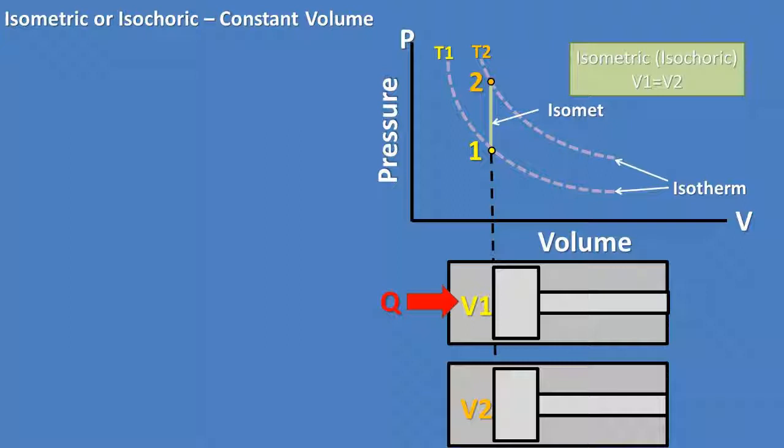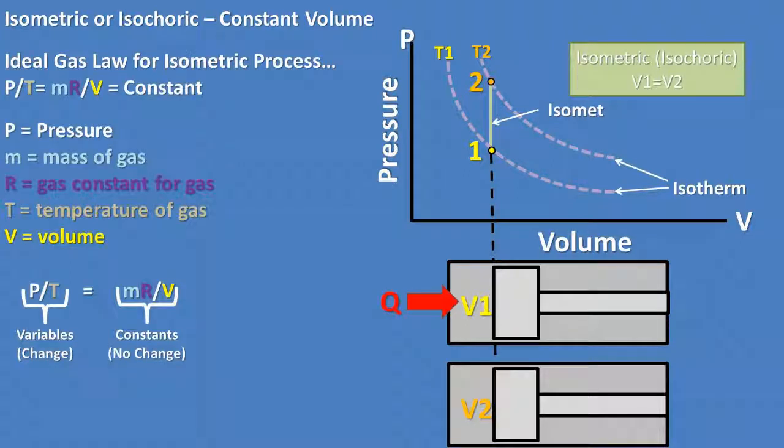The ideal gas law for this isometric process, if we separate the variables and constants, is pressure over temperature, which are the variables that change, equals the mass times the gas constant divided by the volume in the piston chamber, which are all of the constants.